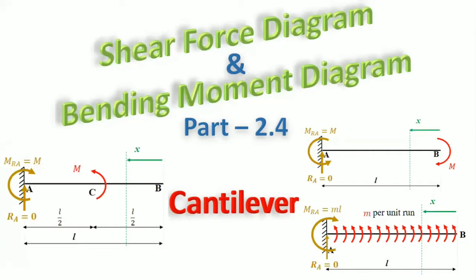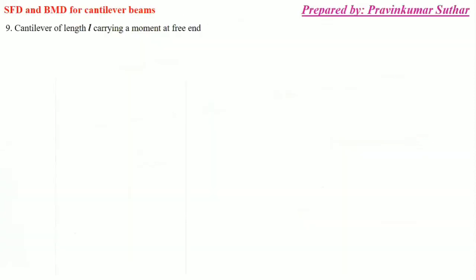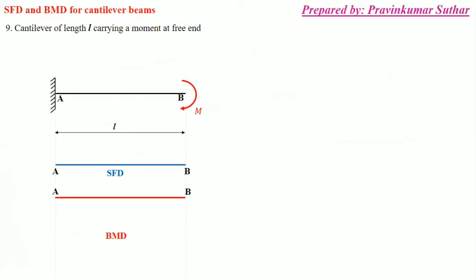Hello friends, this is part 2.4. In this we will complete the shear force and bending moment diagram for cantilever beams — specifically for cantilever beams with different types of moments. Case number 9: a cantilever of length l carrying a moment at the free end. This is a cantilever beam of length l having a moment capital M. These are the references for SFD and BMD and we will move from free to fixed end, from B to A.